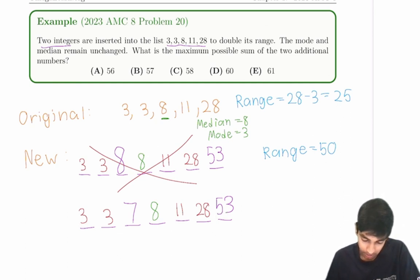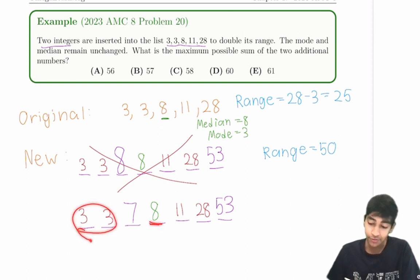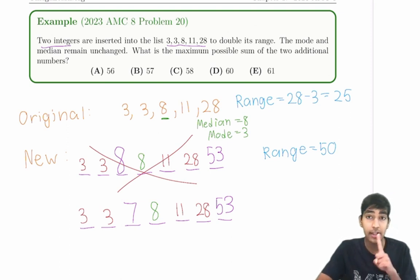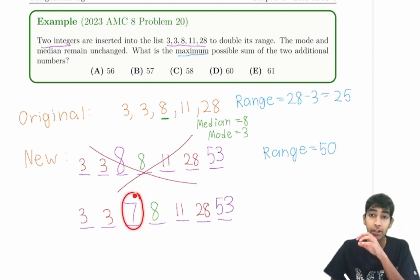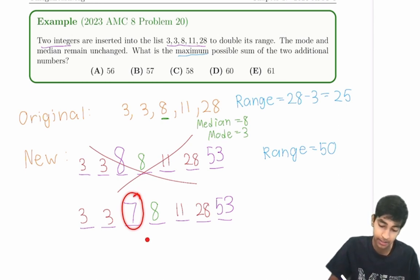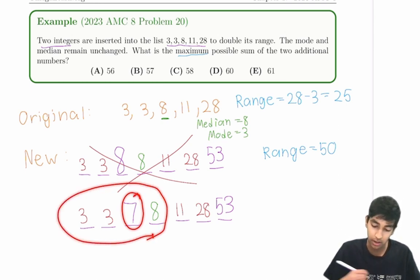Does this work? The median's 8, the mode is 3, only 3, and the range is 50. This works. Aha. But the question is, is this the maximum, or is there something higher? Well, notice that this is the highest value for the number inserted on the left side. 7 is the highest possible value.